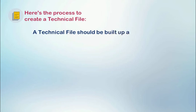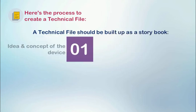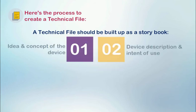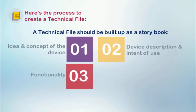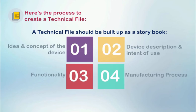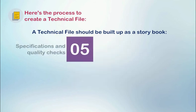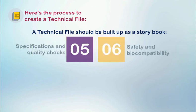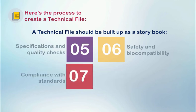Here's the process to create a technical file. A technical file should be built up as a storybook. You will need to start with the idea and concept of the device. Describe what the device does and the conditions it treats. Describe the device and how it works. Describe how it is manufactured, including microbiological aspects and sterilization. Describe the specifications and quality checks. Describe the aspects of safety and biocompatibility. Describe how it complies with standards, and more.